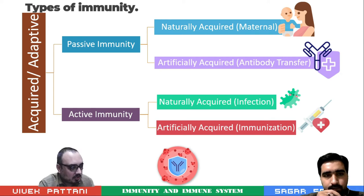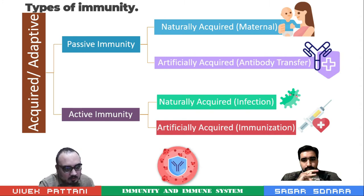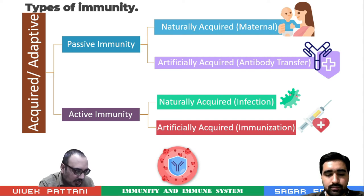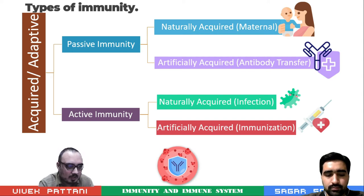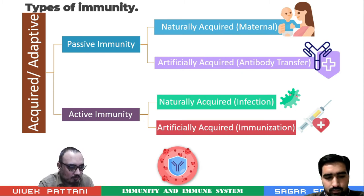Active immunity is effective only after a lag period, but passive immunity provides immediate immunity. In the case of active immunity, immunological memory is present, whereas in passive immunity no memory will be present in the system.